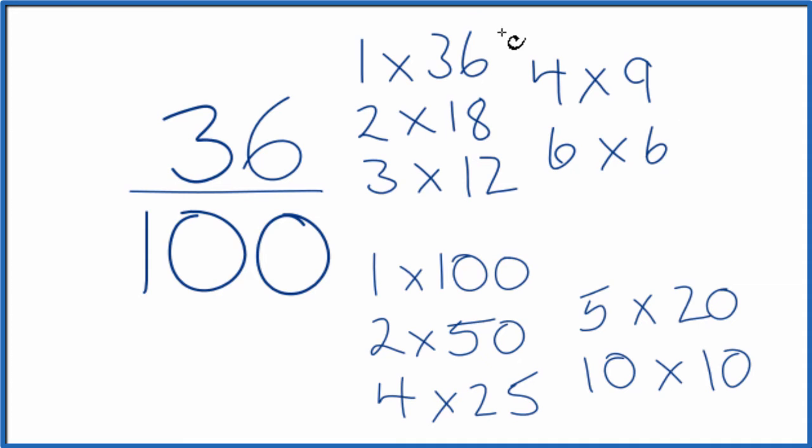So these are the factors for 36 and 100. We're looking for the greatest common factor, something that goes into both 36 and 100. And that seems to be 4. 4 looks like the greatest factor.